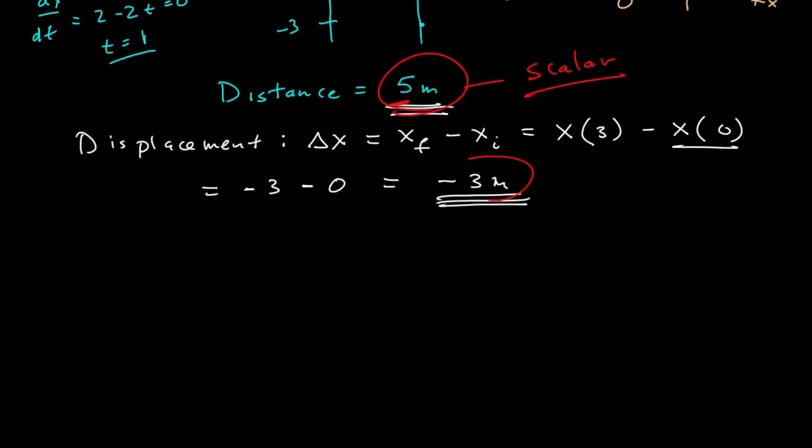While the displacement is a vector. Remember, this is a vector function of time. So evaluating it at two times gives me two vectors. The difference between them is another vector. So the displacement here is a vector. It has a magnitude of three meters.